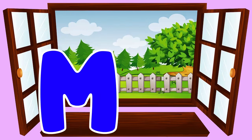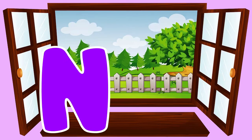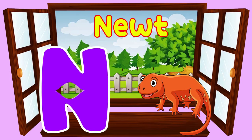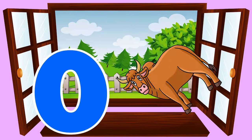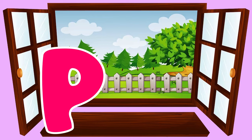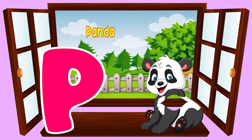M is for monkey. m, monkey. N is for newt. n, newt. O is for ox. o, ox. P is for panda. p, panda.